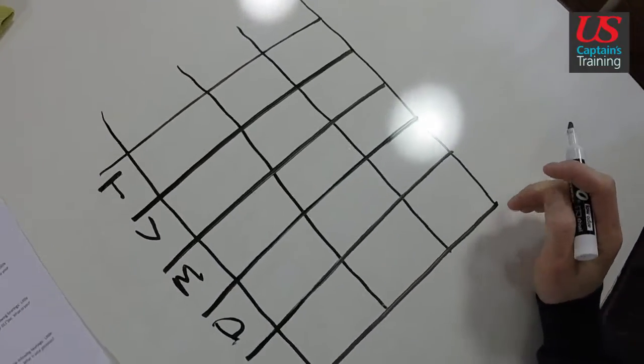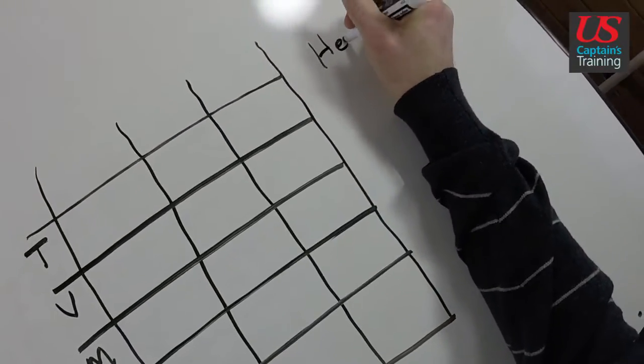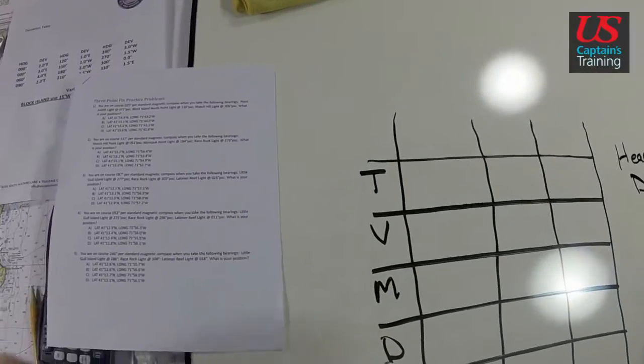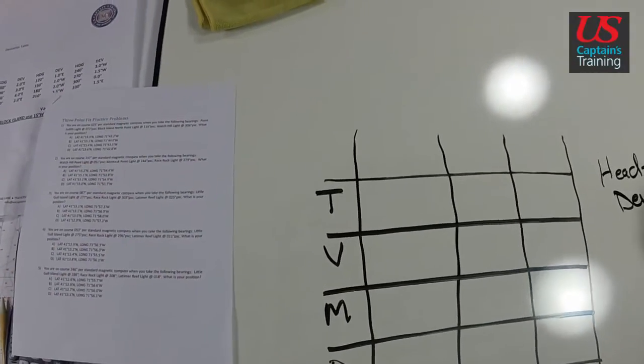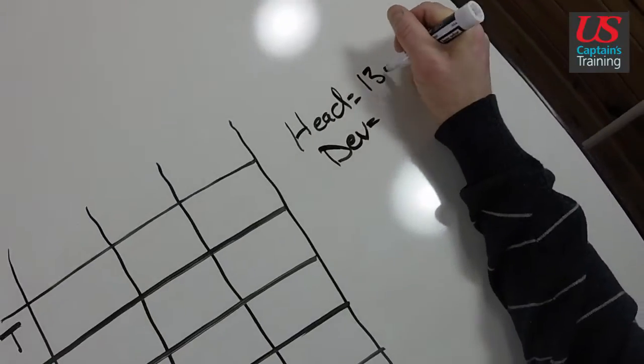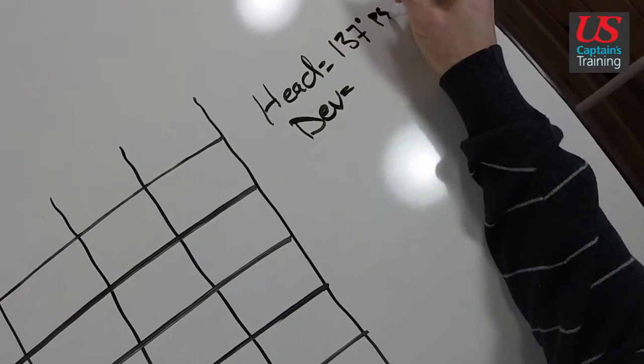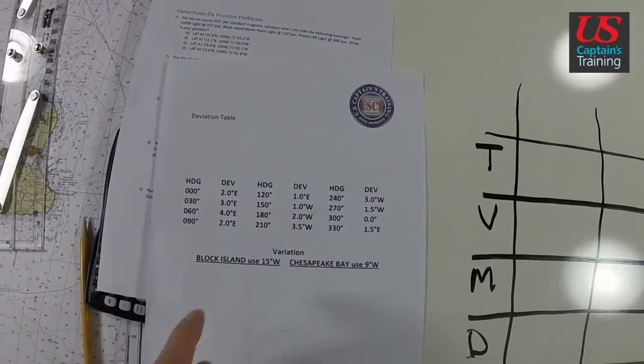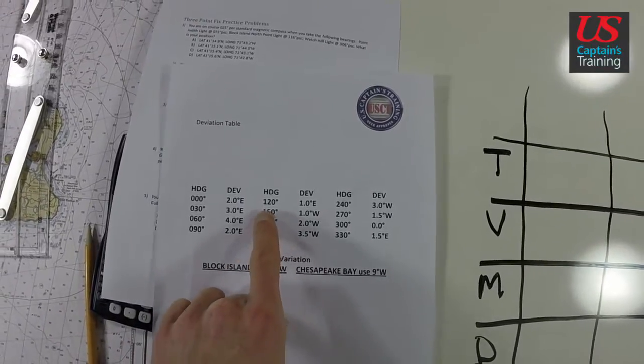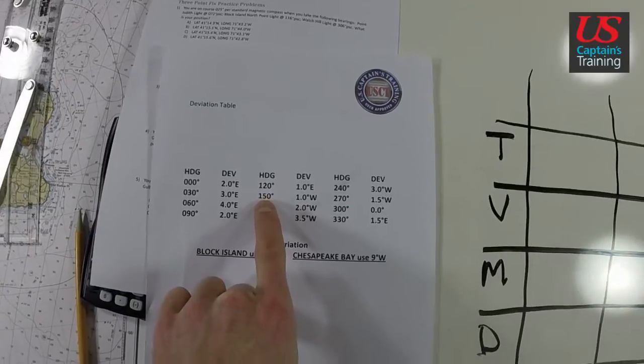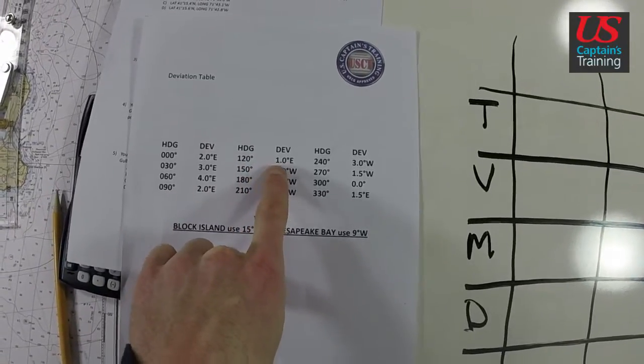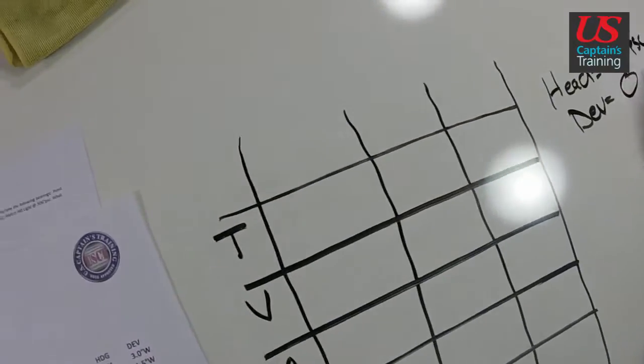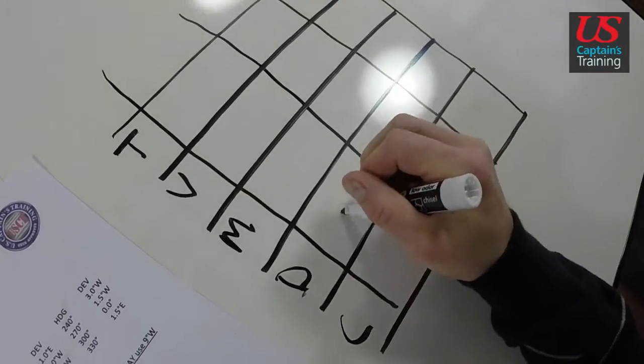And now what was our heading? Our heading determines our deviation, right? Deviation is dependent on heading. We are on course 137 PSC, which means our deviation off of our card is 137. That's right in between 120 and 150. We go from 1 east to 1 west, so our deviation is going to be 0.